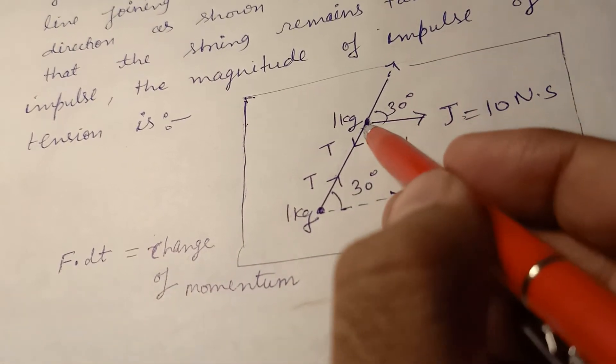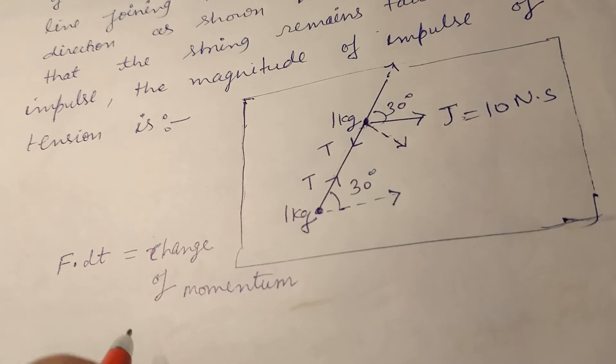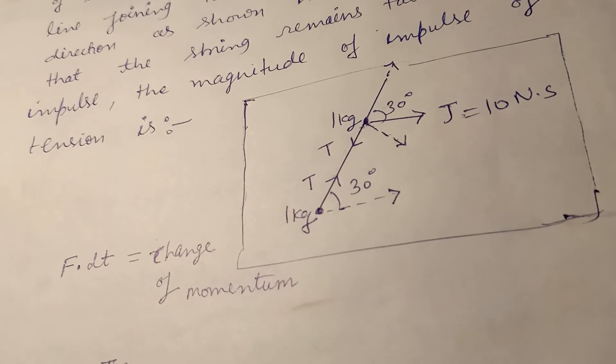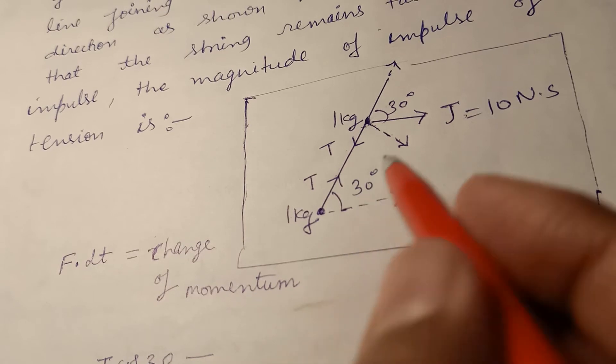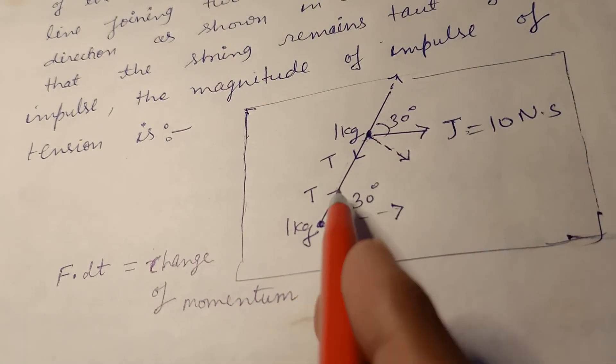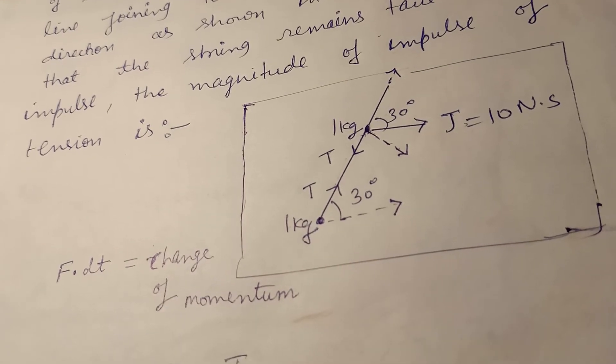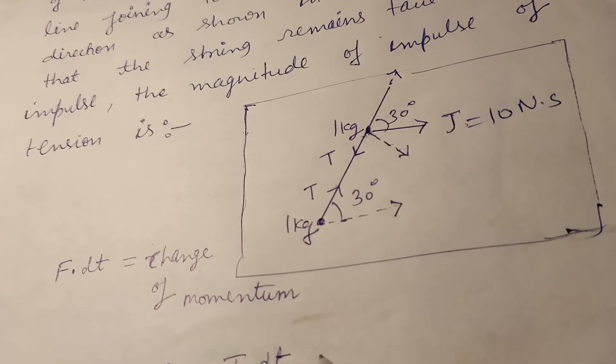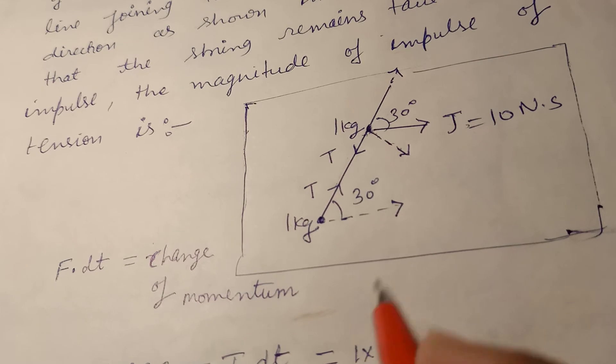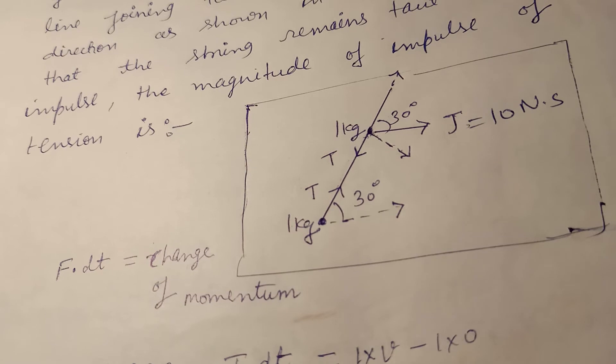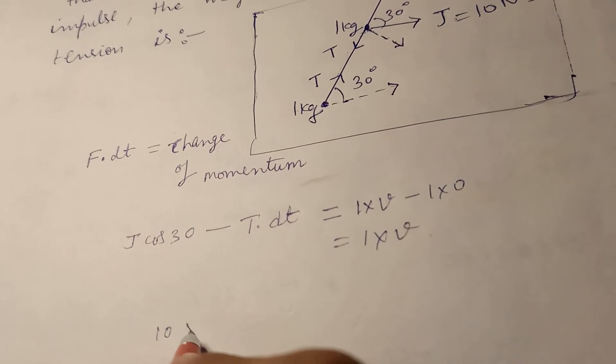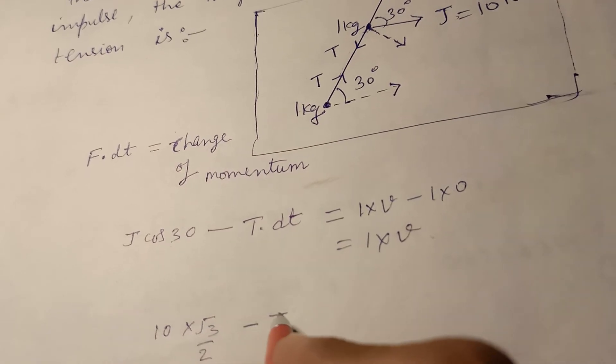First ball - if we put the impulse balance, J is a vector quantity. J's one component is J cos 30 degrees minus tension T. T into dt is equal to change in momentum. Initially at rest, final velocity V, so 1 times V minus 1 times 0. This is 1 times V. J is 10, so 10 times root 3 by 2 minus T into dt equals V.